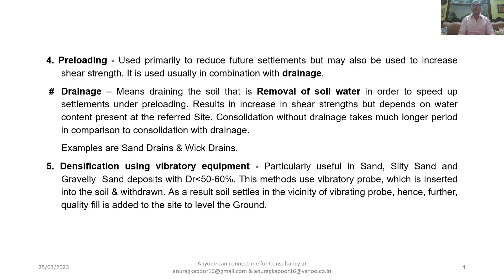Method 4 is pre-loading, used primarily to reduce future settlements but may also be used to increase shear strength. After the building is constructed, settlements are kept at a bare minimum and do not exceed specified permissible limits. It is usually used in combination with drainage. Draining the soil — that is, removal of soil water — is done to speed up settlements under pre-loading, which in turn results in an increase in shear strength. Consolidation without drainage takes much longer compared to consolidation with drainage. Examples of drainage methods adopted at the site are sand drains and wick drains.